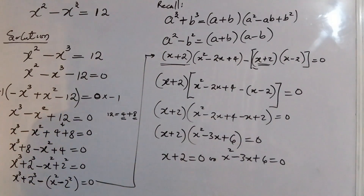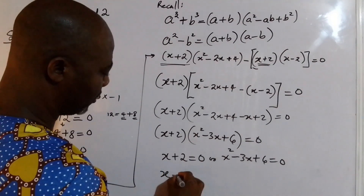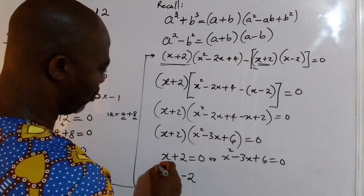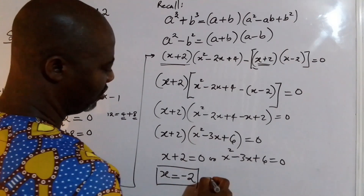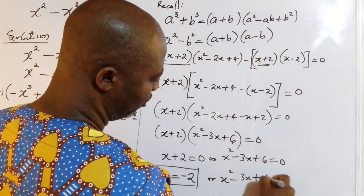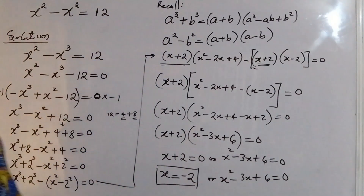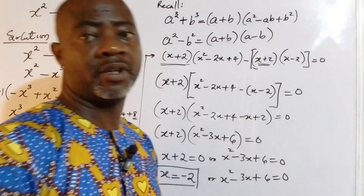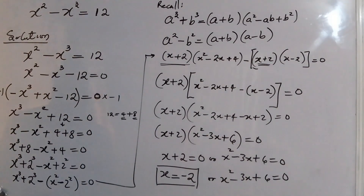From this, we can say x + 2 = 0, which gives x = negative 2, or x² minus 3x plus 6 = 0. So the first value is x₁ = negative 2. The remaining quadratic expression will give us two additional values of x.